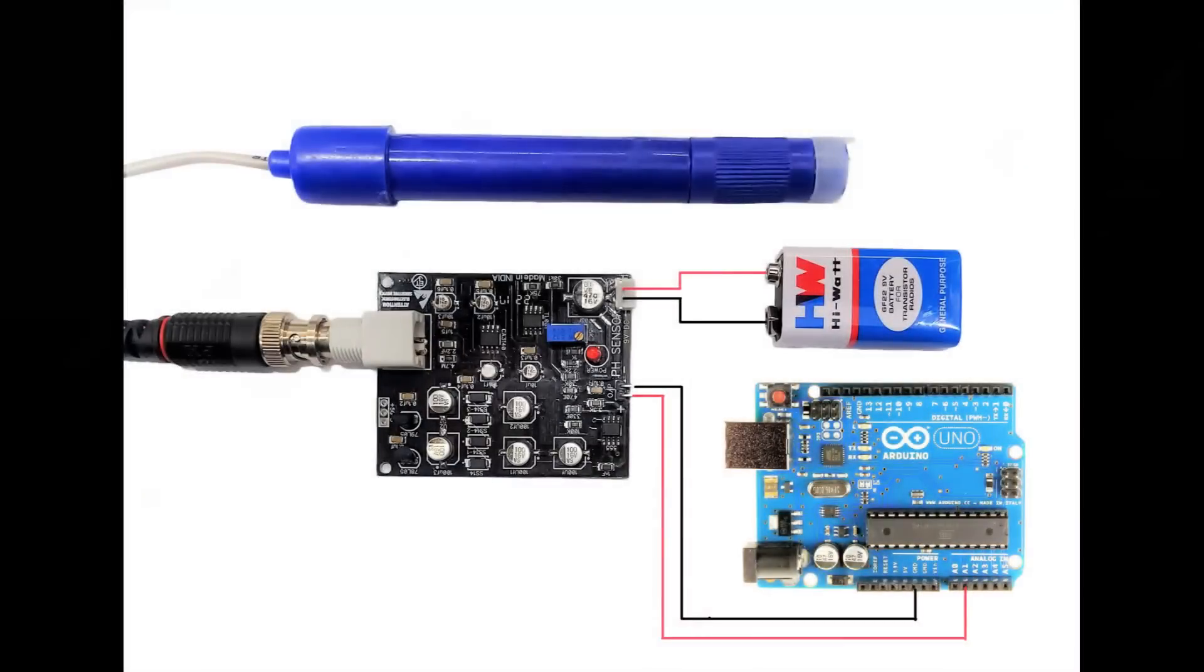Here is a circuit diagram for interfacing dissolved oxygen sensor with Arduino board. Connect signal converter board VCC pin to 9V battery and connect ground respectively. Similarly, connect the output of the board to the analog pin A1 of Arduino board.